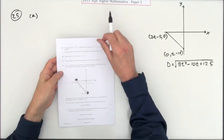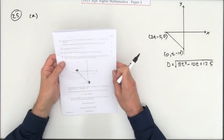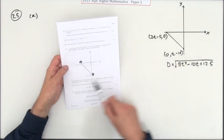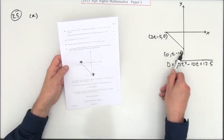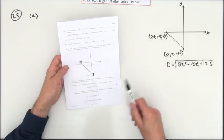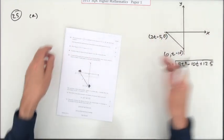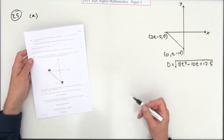Question 25 from paper one of the 2015 Higher. You've got this diagram here. You have to work out an expression for the distance between these two moving points and then determine whether or not this distance is increasing or decreasing at some time later on. So this is the expression you have to establish.